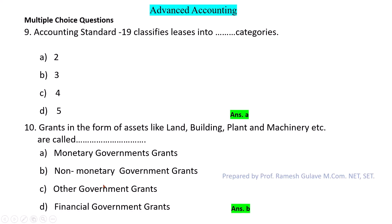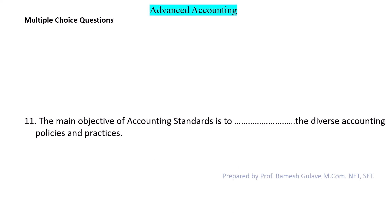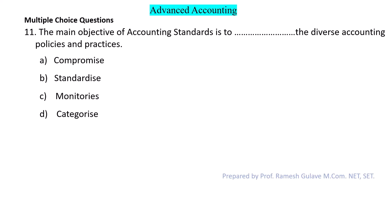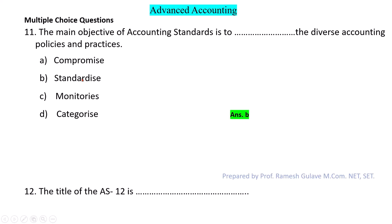Next question: The main objective of accounting standards is to do what with diverse accounting policies and practices? The main objective of accounting standards is to standardize the diverse accounting policies — to bring diverse accounting policies into a standard format. So option B is the right answer.